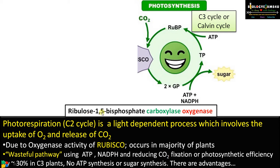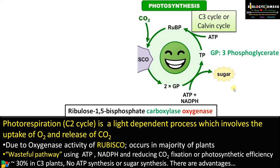Rubisco stands for Ribulose 1,5-bisphosphate carboxylase oxygenase. This is the enzyme that catalyzes the first step of the Calvin cycle, or light-independent reaction, where carbon dioxide combines with RuBP in the presence of Rubisco forming 3-phosphoglyceric acid and ultimately synthesizing sugar. That cycle is called the Calvin cycle.